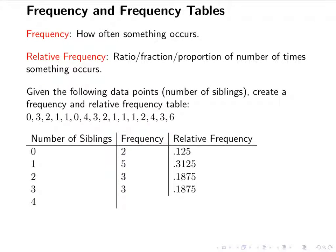The number of people with 4 siblings is 2, and 2 divided by 16 is 0.125. The number of people with 5 siblings is 0, so 0 divided by 16 is 0. The highest number we have, 6, has a frequency of 1, and that gives a relative frequency decimal of 0.0625.